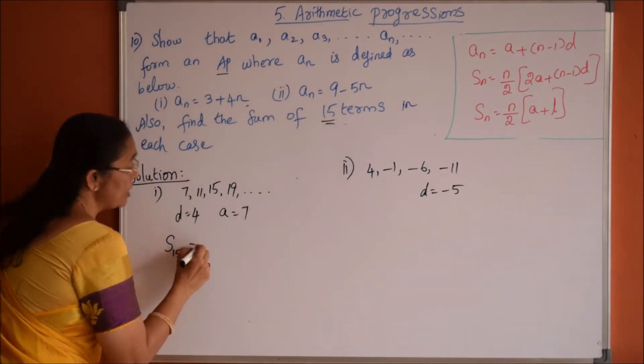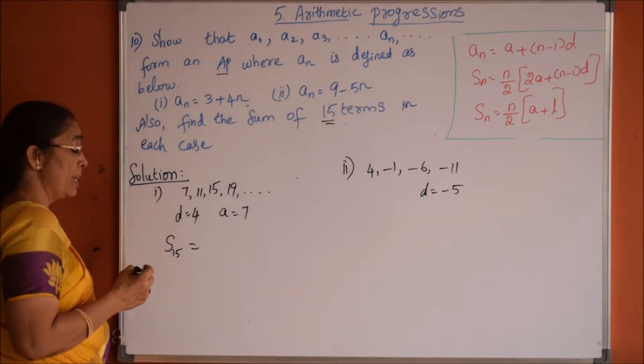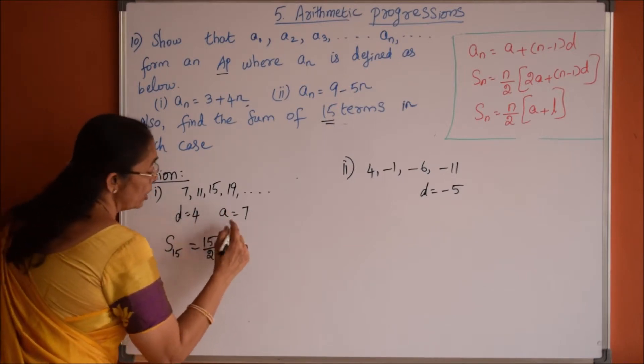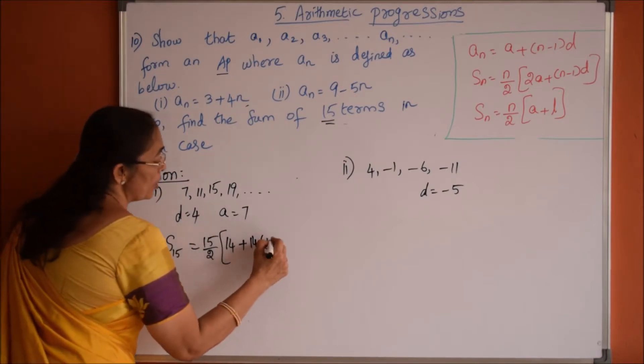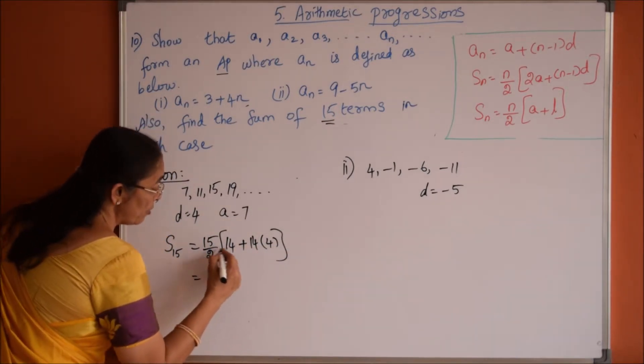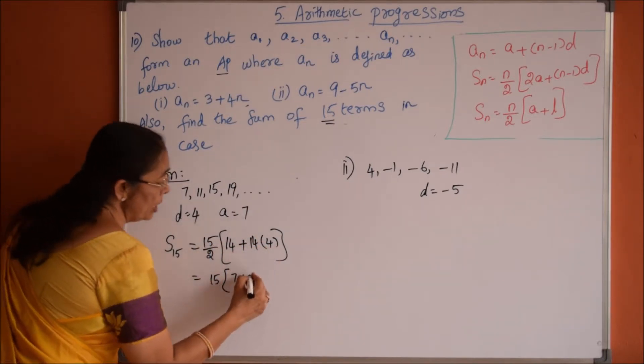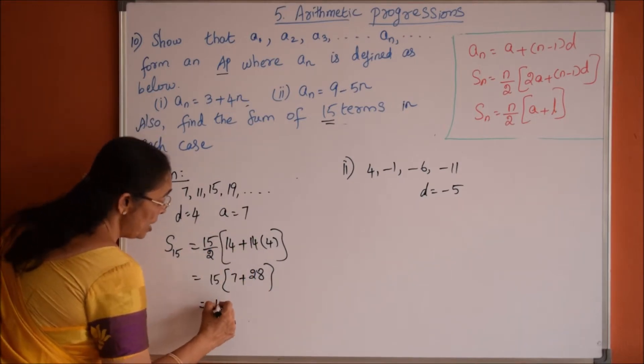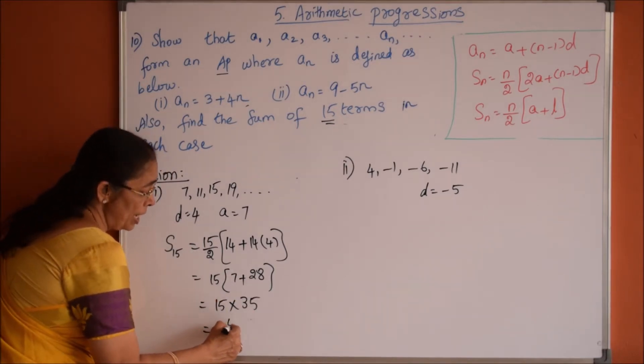Therefore S_15 is equals to using the formula S_n equals n by 2 of 2a plus n minus 1 into d. S_15 is 15 by 2 of 2a, 2 sevens are 14 plus n minus 1, 15 minus 1, 14 into common difference 4. So we get 15 is there outside, let me take 2 inside. We will get 15 into 7 plus 7, 4s are 28. I cancelled 2 for both terms. So 15 into 28 plus 7, 35, which is equals to 525.